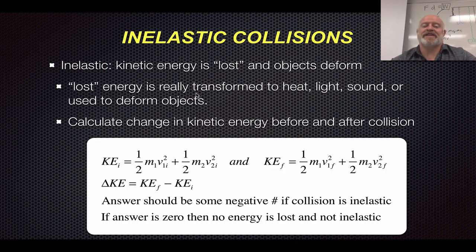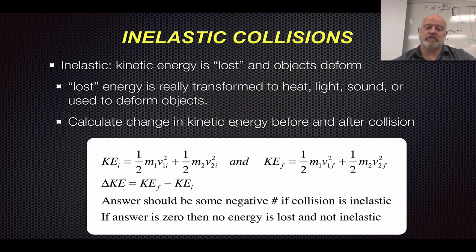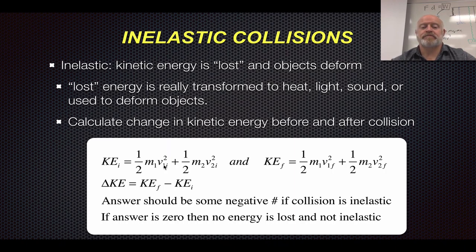What that means for us is that we can take a calculation, and any time you have an inelastic collision and two things collide, we can calculate the change in kinetic energy. We're looking for the kinetic energy before and the kinetic energy after, and we should see a change — a loss — meaning KE after should be less than KE before. We break it down by initial and final kinetic energy. Initially, KE equals one-half m-v-squared for object one, plus one-half m-v-squared for object two. Then we compare that to the final KE, which is the same formula but with final velocities.